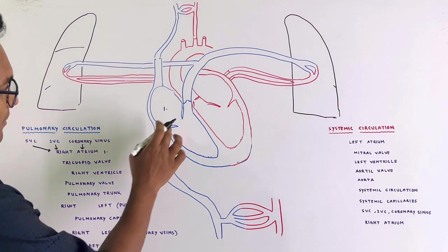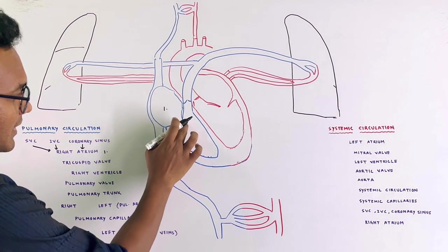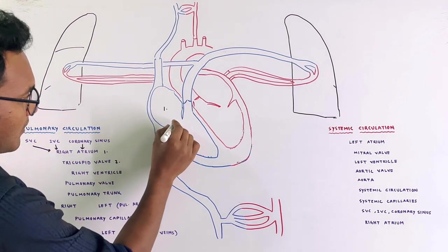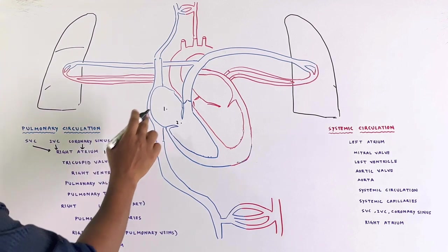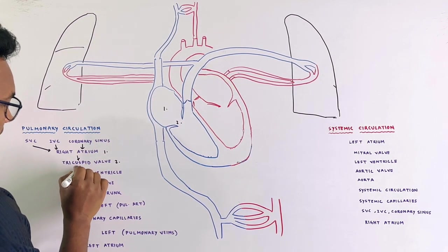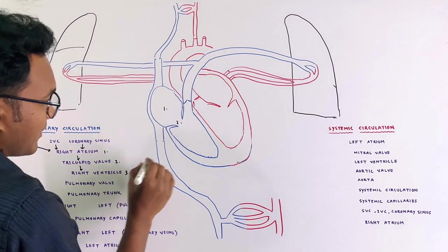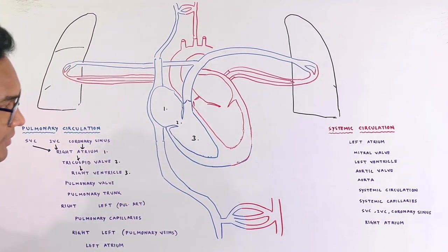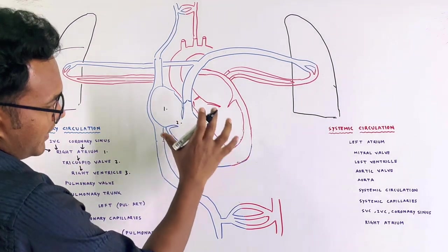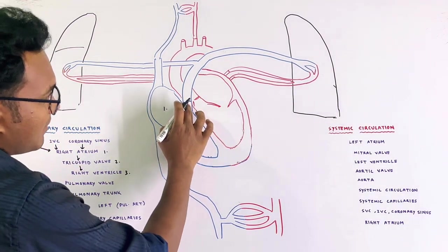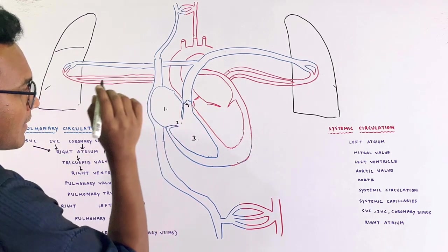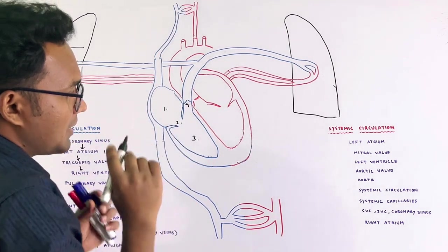Blood enters the right ventricle from the right atrium. The valve between the right atrium and right ventricle is called the Tricuspid valve. From the right ventricle, blood exits through the pulmonary semilunar valve.